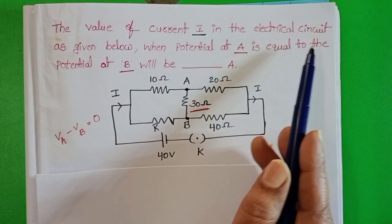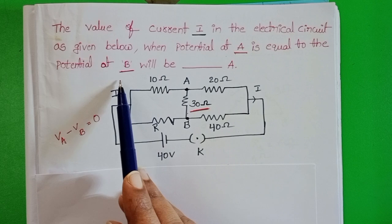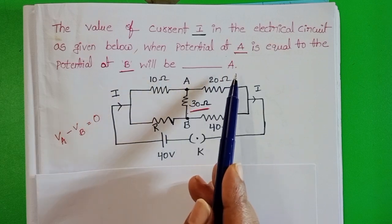The value of current I in the electrical circuit as given below, when potential at A is equal to the potential at B, will be dash amperes.